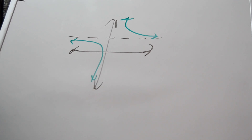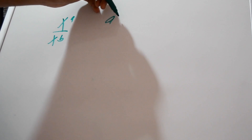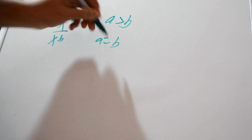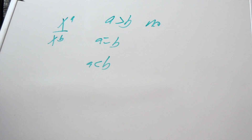From the limit rule as x approaches infinity, we compare the exponents. For x^a divided by x^b: if a is greater than b, there is no horizontal asymptote. If a equals b, there is a horizontal asymptote. If a is less than b, there is also a horizontal asymptote. These are the three cases we can have.